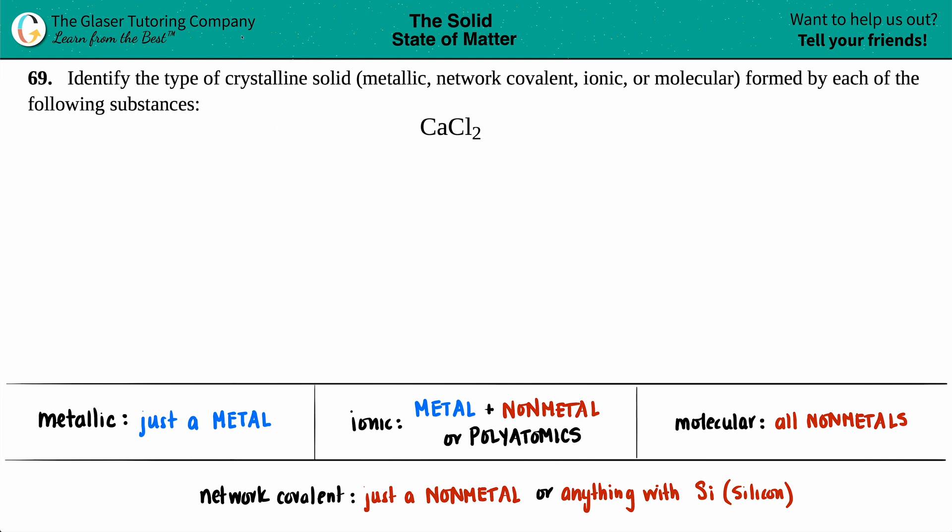Number 69: Identify the type of crystalline solid, which could either be metallic, network covalent, ionic, or molecular, formed by each of the following substances. We have calcium chloride, which is CaCl2.